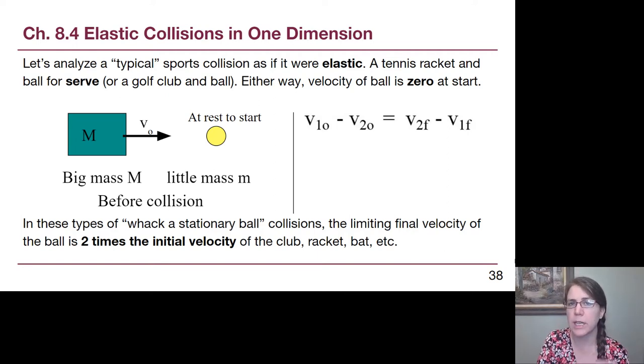And so your velocity at the beginning of that collision is about the same as your velocity at the end of that collision. So if we used that new tool that's specific to elastic collisions to think about the maximum possible speed that ball at rest could have, we can think about the big mass. Let's choose a golf club for this. The big mass as object one, and the little mass, the golf ball, as object two.